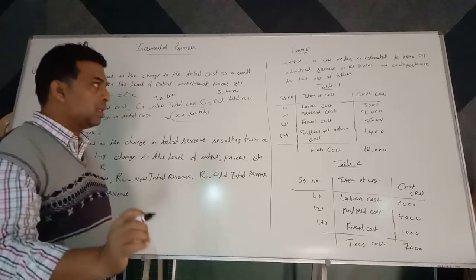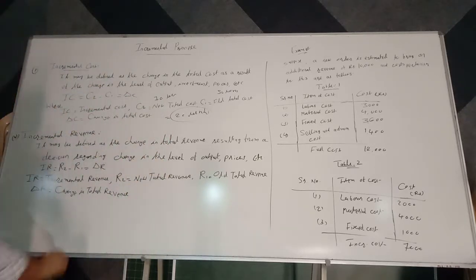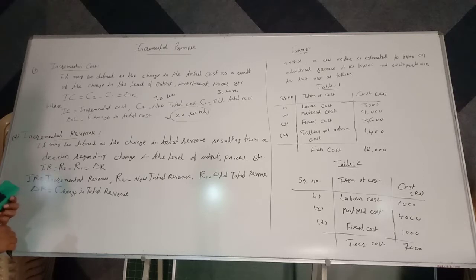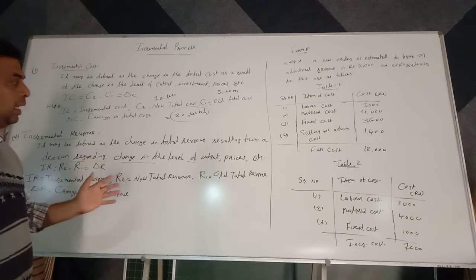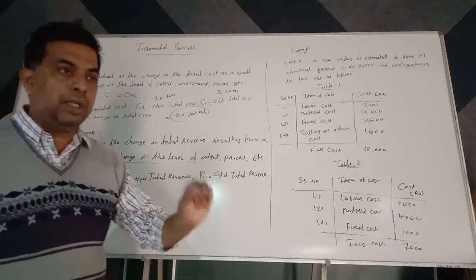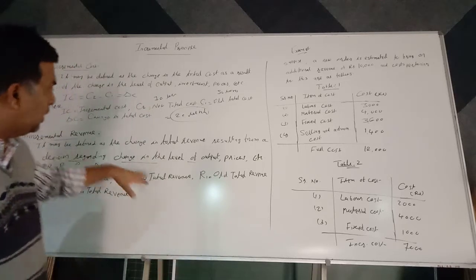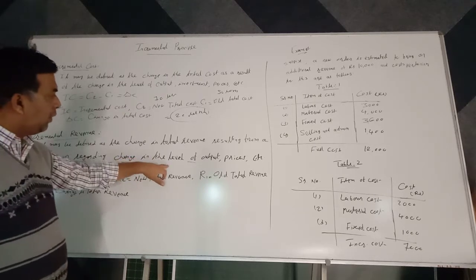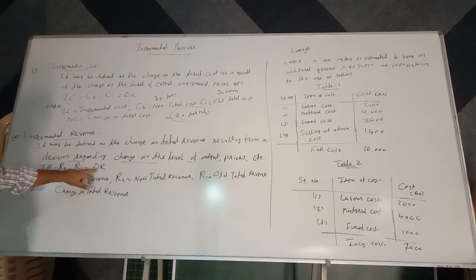Incremental cost is the change in total cost as a result of change in output, investment, or prices. Similarly, incremental revenue may be defined as change in total revenue resulting from a decision regarding change in the level of output, prices, etc. Simple marginal revenue refers to change in total revenue due to sale of one additional unit, but incremental revenue is the broader concept.